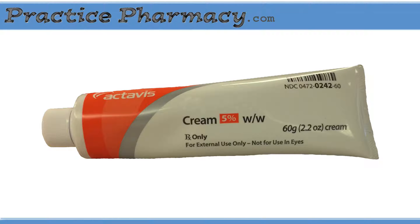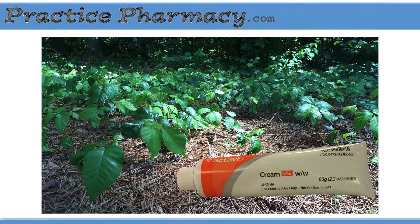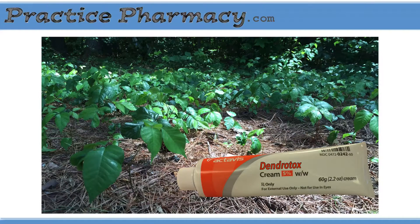For the sake of example, let's say we're looking at a new medication that's supposed to prevent rash in people who've been exposed to poison ivy. Let's call it Dendrotox. You rub it on your skin before potential exposure and somehow it keeps you from developing an allergic reaction.